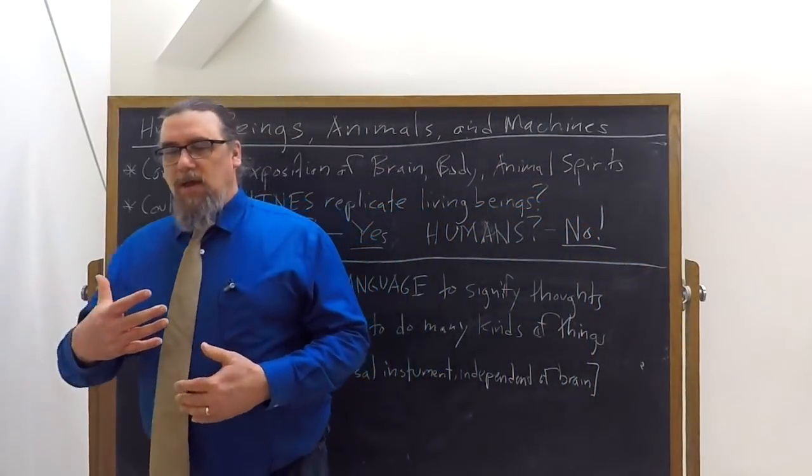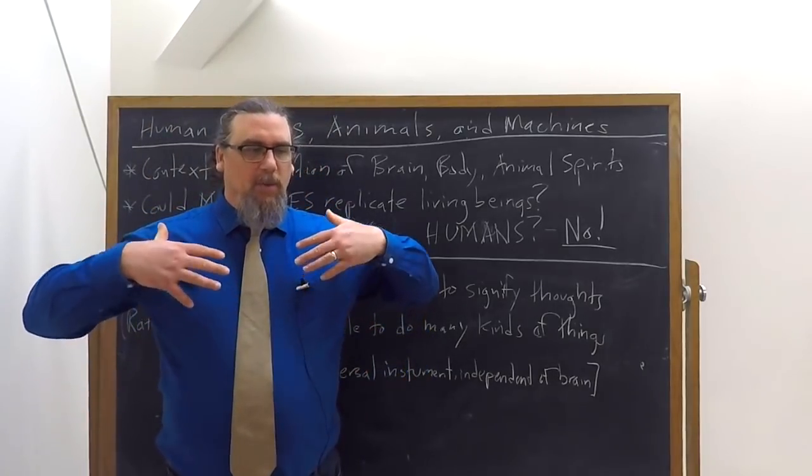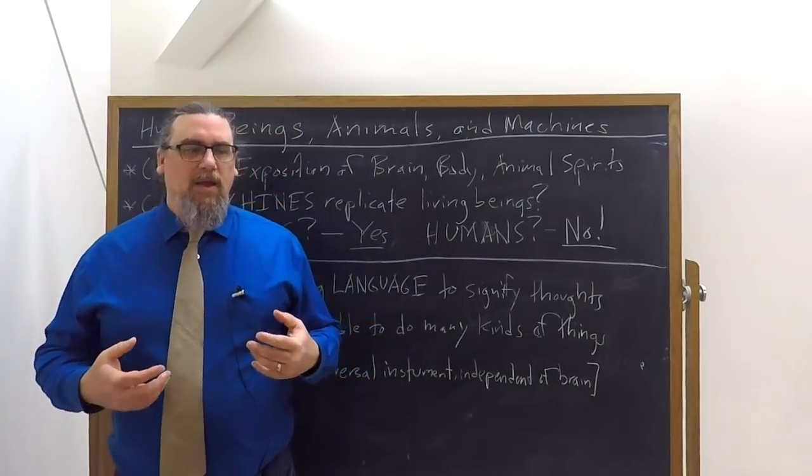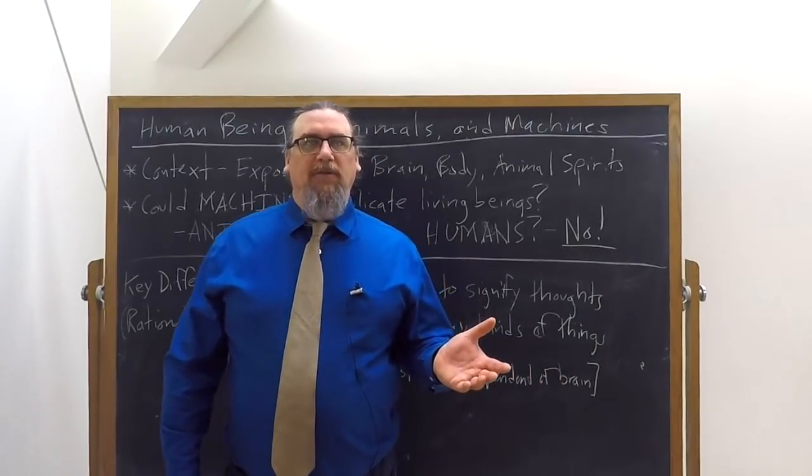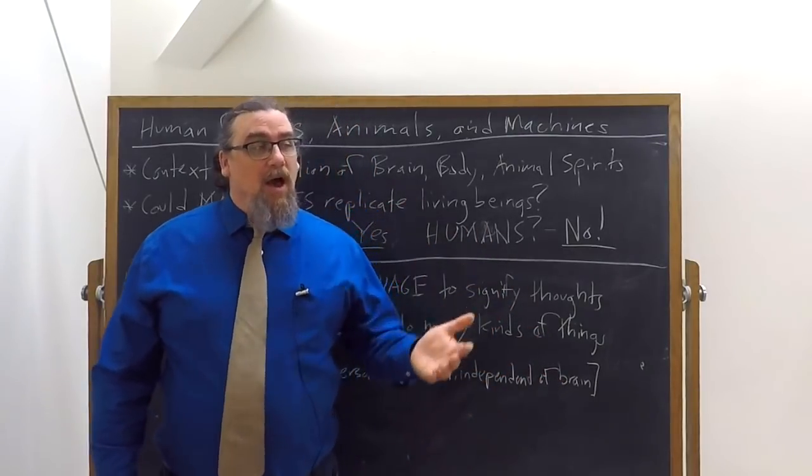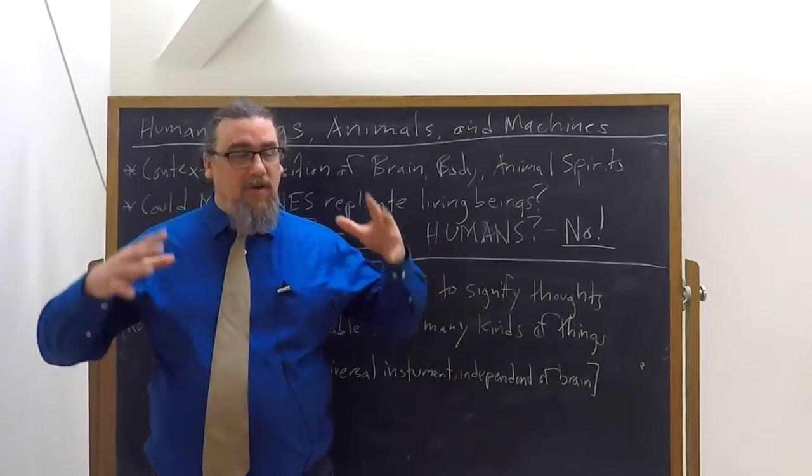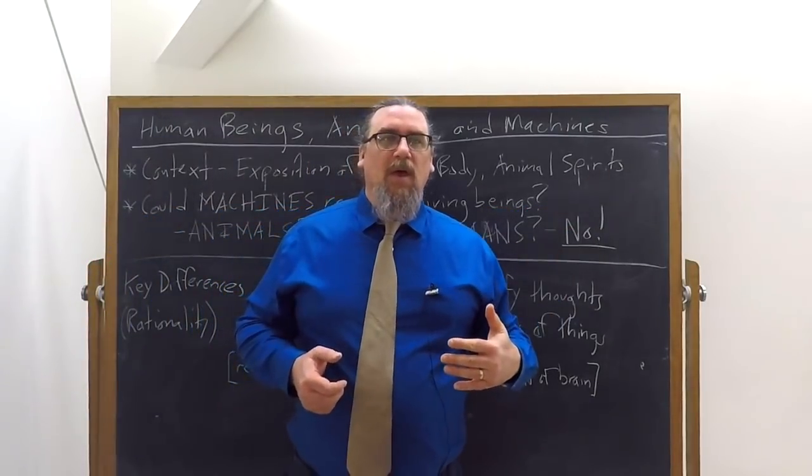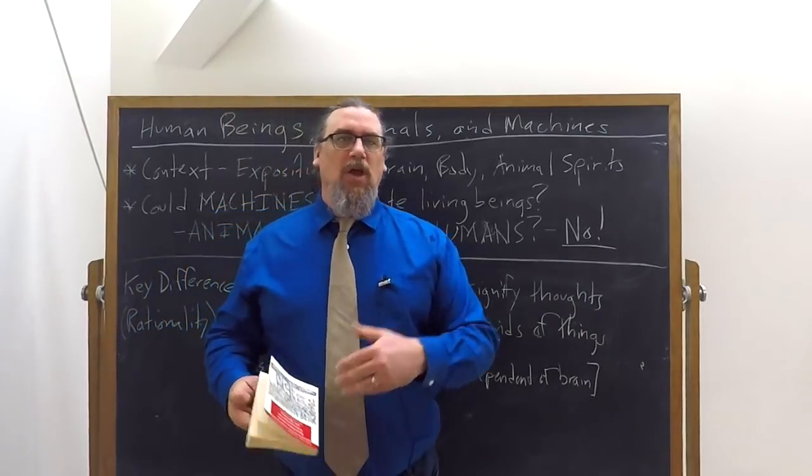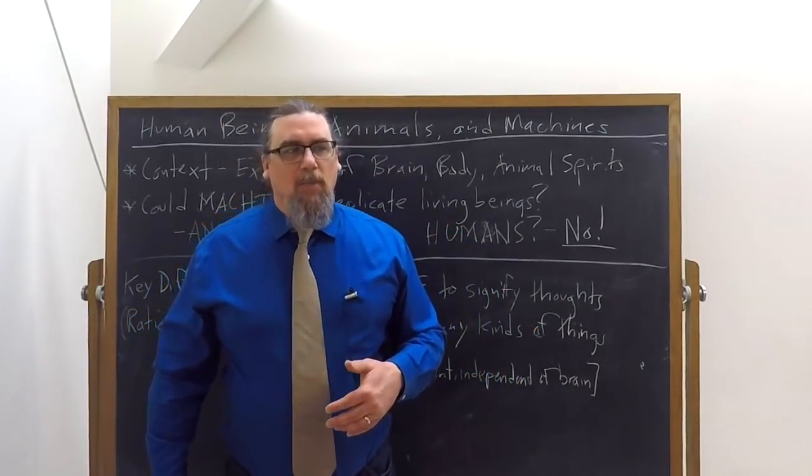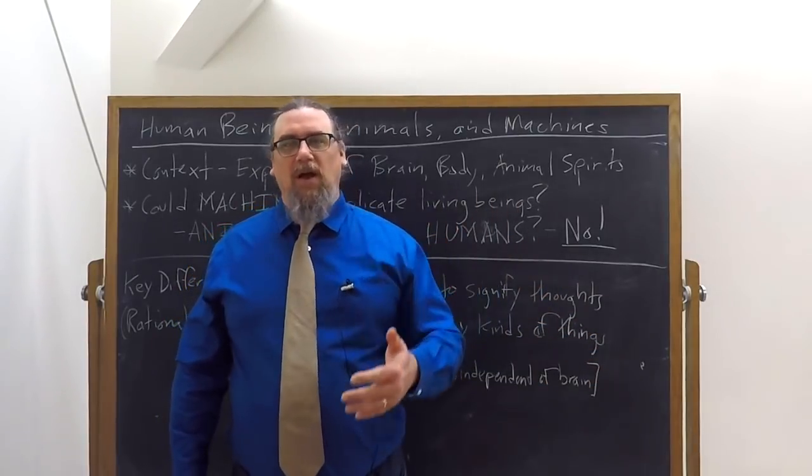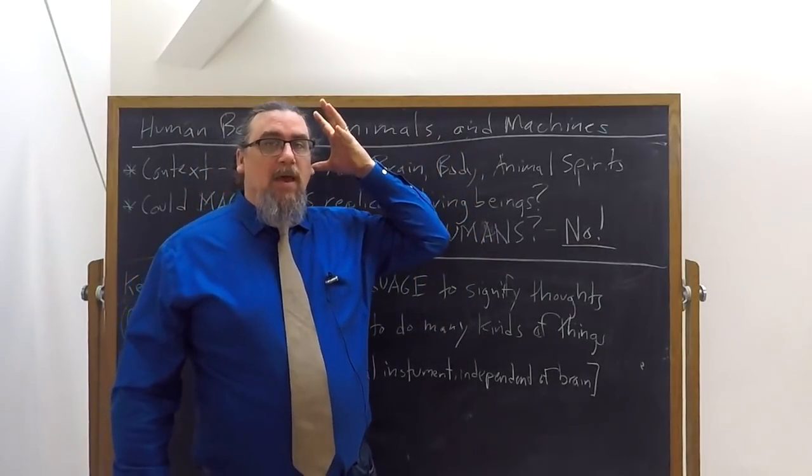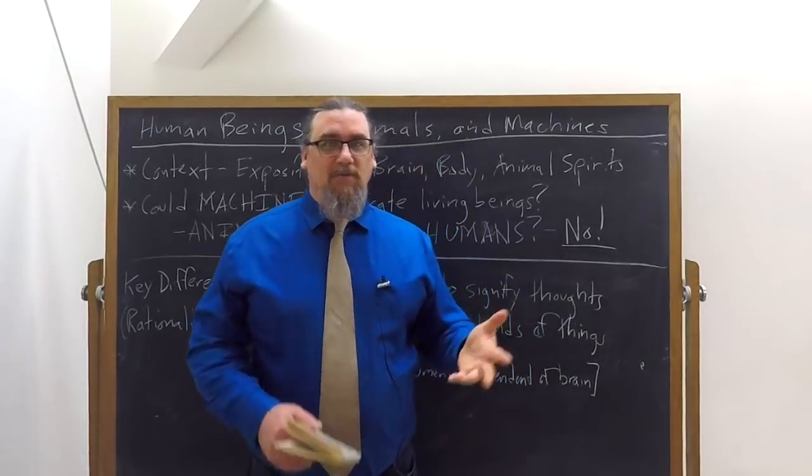In the course of that discussion, he tells us about how he was setting out for us a theory of the relationship between body and mind or brain, body, and what at that time they were calling the animal spirits. And the view that they had in the physiology of that time is that there were various fluids that moved around in our body called the animal spirits.